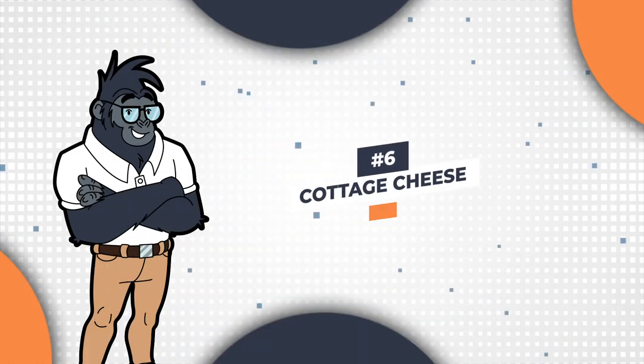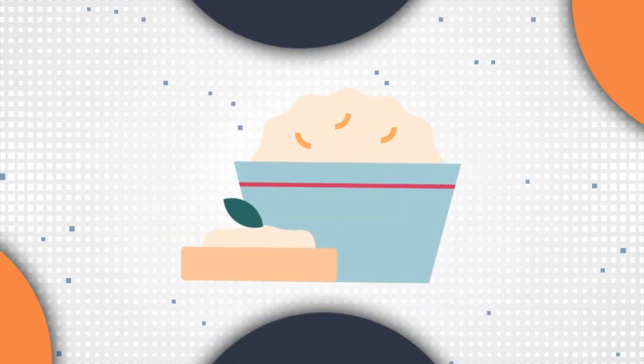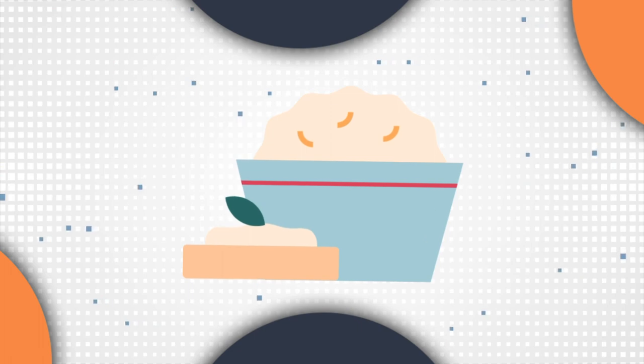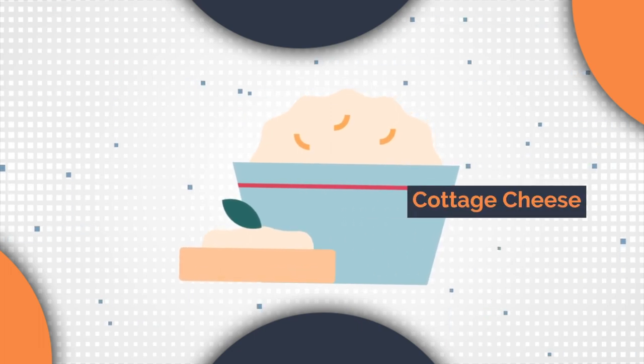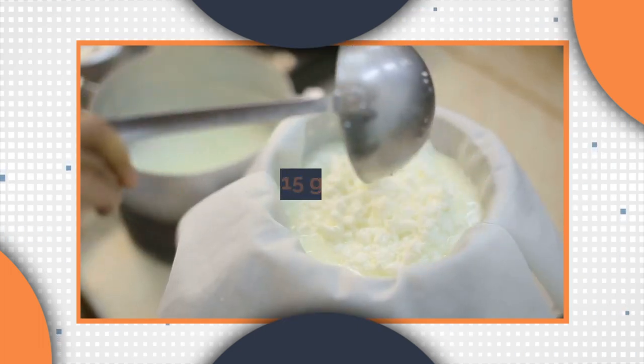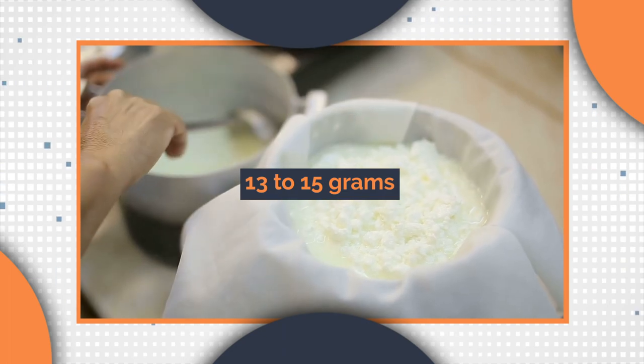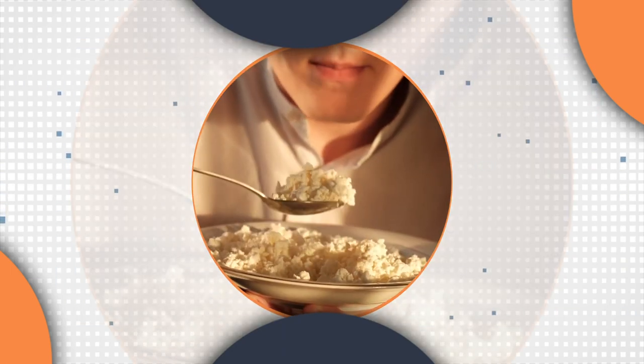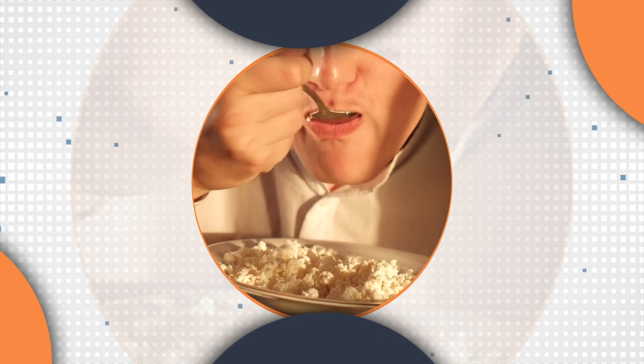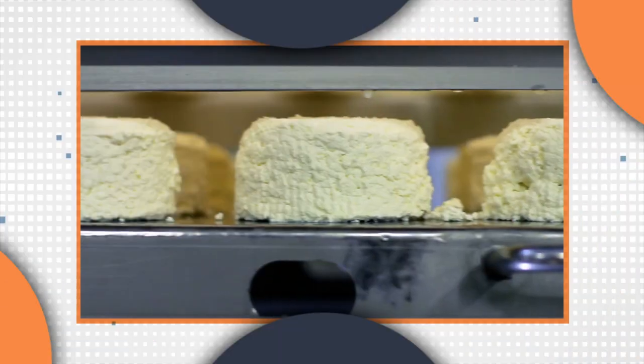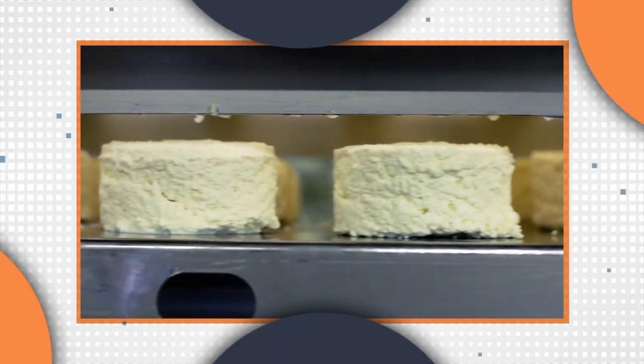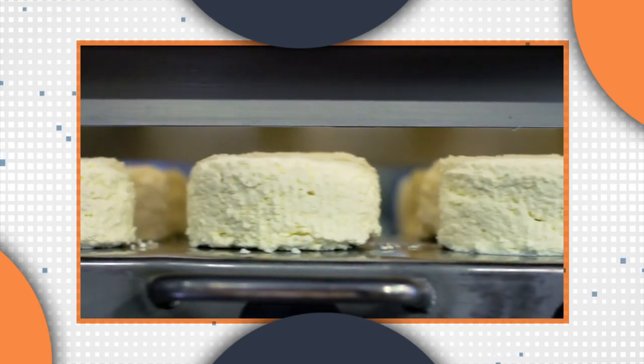Number six, cottage cheese. If you're looking for a protein-packed snack that requires zero preparation, look no further than fat-free cottage cheese. With 13 to 15 grams of protein per half a cup of serving, cottage cheese is a convenient and tasty way to up your protein intake. And while it does need to be refrigerated, it's always on hand and ready to eat whenever you need a quick and easy snack.